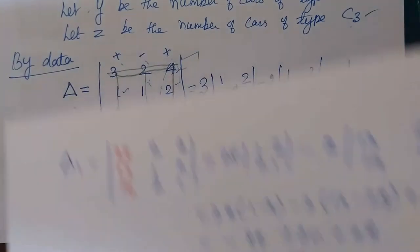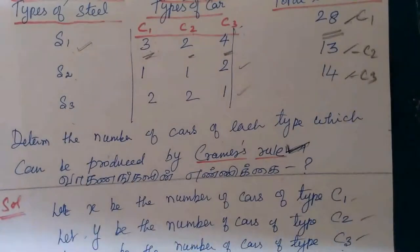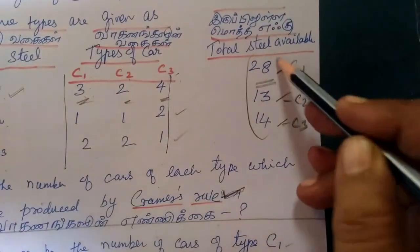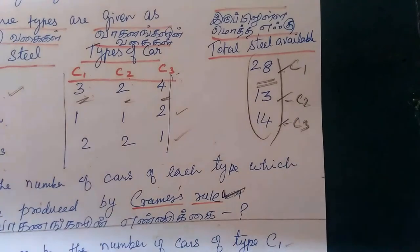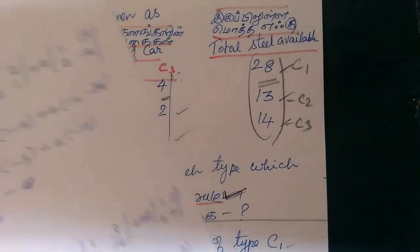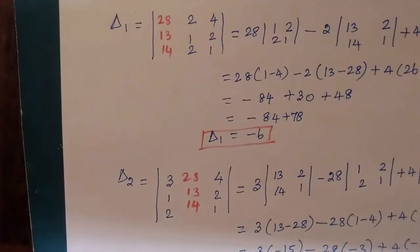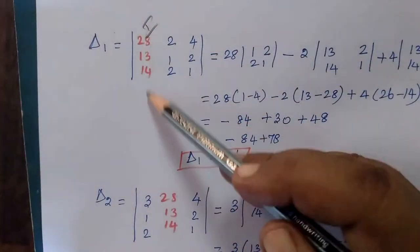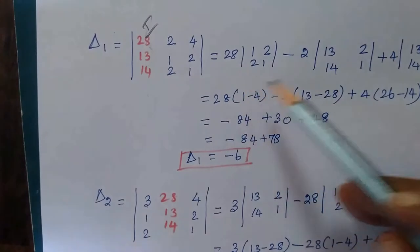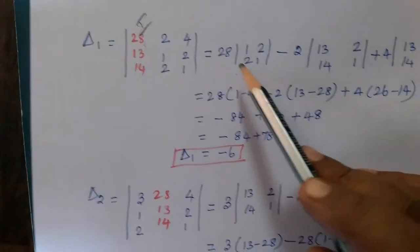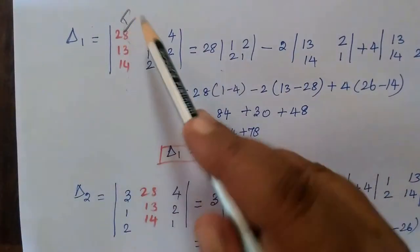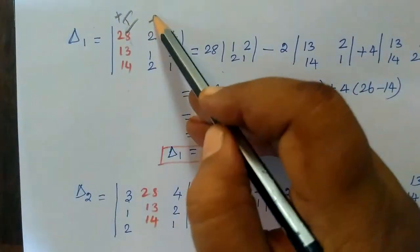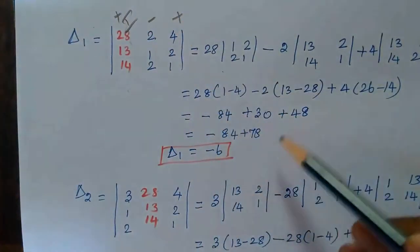Next, we find delta 1. For delta 1, the constant values replace the first column. So here the constant values 28, 13, 14 are written in the first column where the x coefficients were.